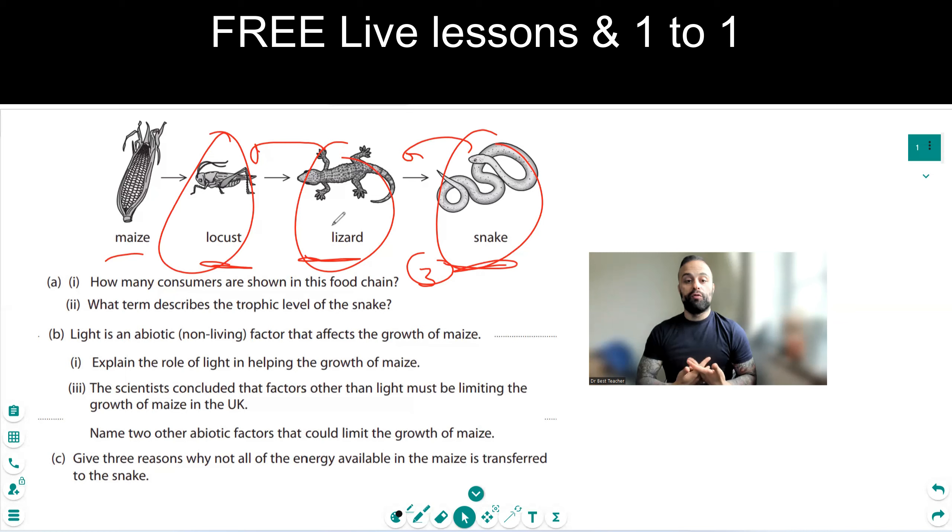So explain the role of light in helping the growth of maize. So that is so it can do some photosynthesis, which is absorbed by the chloroplast that creates some glucose, which is then converted into starch. You don't need to mention the starch point.